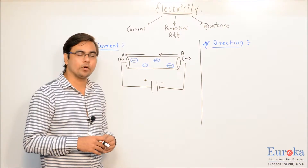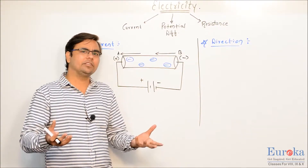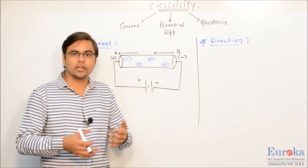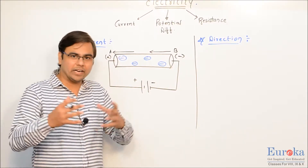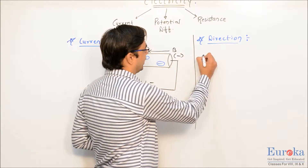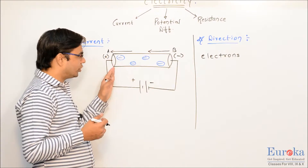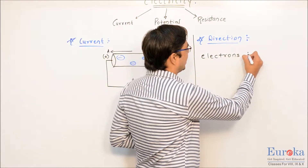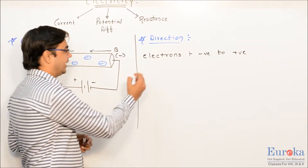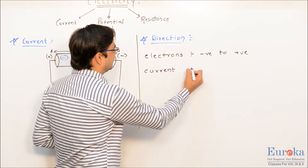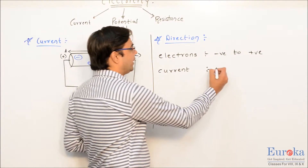Now we will focus on another very important concept: the direction of electrons and the direction of current. You might wonder why we consider the two separately, since electrons constitute current. Electrons flow from the negative terminal to the positive terminal. However, when we talk about the direction of current, the direction of current is considered to be from positive to negative — which is not the same as the direction of electron flow.